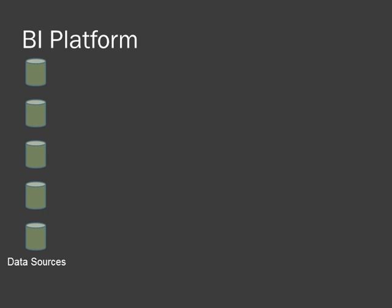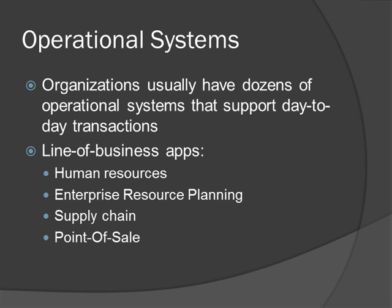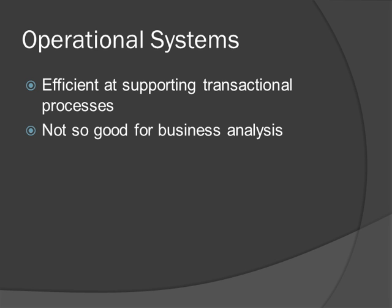Data comes from the operational systems that support the day-to-day transactions of the business. A company or business unit of a large corporation may have dozens of operational systems. These systems can be line of business applications like human resource systems, supply chain systems, enterprise resource planning applications, or customer resource management systems. These operational systems are extremely efficient at supporting transactional processes, but they're not very good at supporting business analysis, especially when the analysis requires compiling data from multiple data sources.